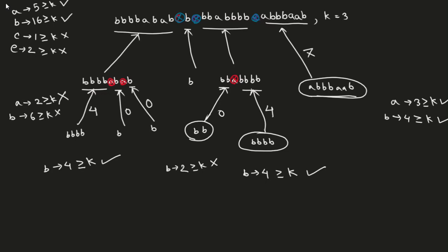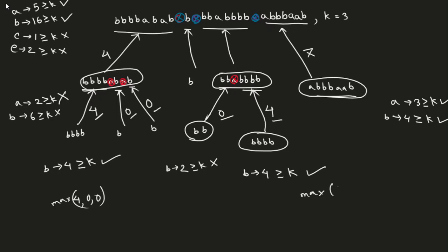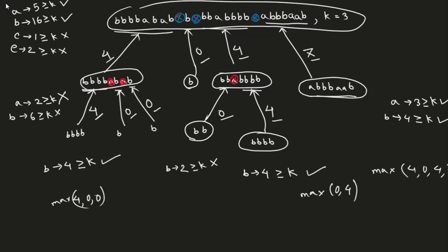Now we take the maximum at each level. For one group we take the maximum of four, zero, and zero — which is four. For another group, the maximum of four and zero is four. Combining everything, we take the maximum of four, zero, four, and seven — which is seven. So the entire string returns seven.